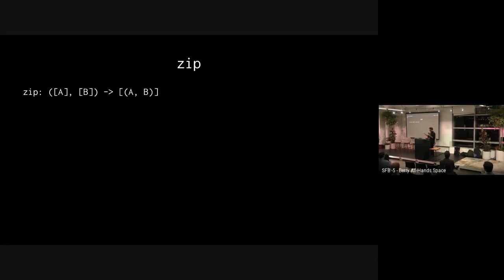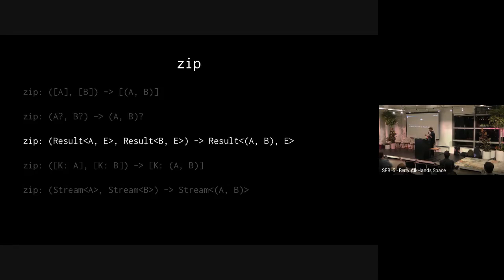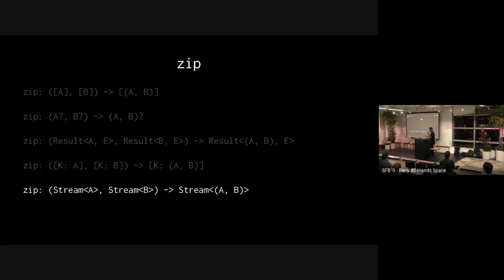Zip, if you strip away all the syntax from the standard library, is really just a function that takes an array of A's and an array of B's and returns an array of (A, B) tuples. It's doing a transformation on arrays and tuples — changing a tuple of arrays to an array of tuples. When said that way, there's maybe more: a tuple of Optionals to an Optional tuple, a tuple of Results to a Result of tuples, a tuple of dictionaries to a dictionary of tuples, a tuple of streams to a stream of tuples.